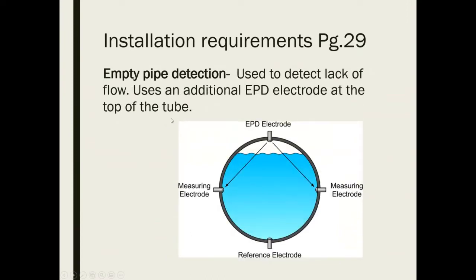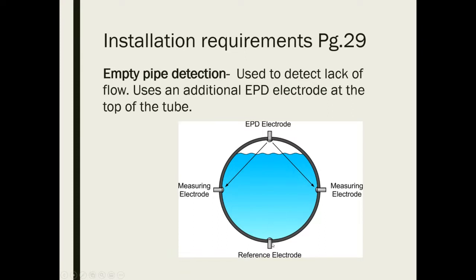Empty pipe detection: having the pipe empty is bad, especially when the unit is powered on. Some mag meters have empty pipe detection electrodes that compare against a reference electrode at the bottom of the pipe — if they get the same electrical signal the pipe is assumed full; if they differentiate, the pipe is assumed empty. When shutting down, turn off the mag meters before draining the piping system to avoid burning out the coils.